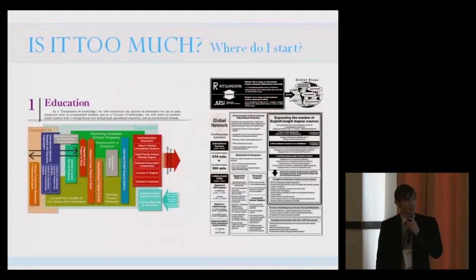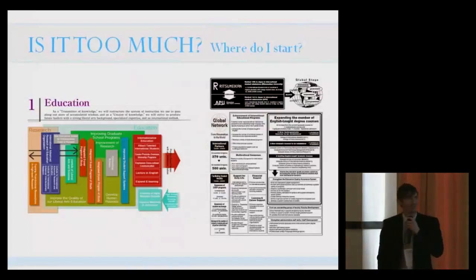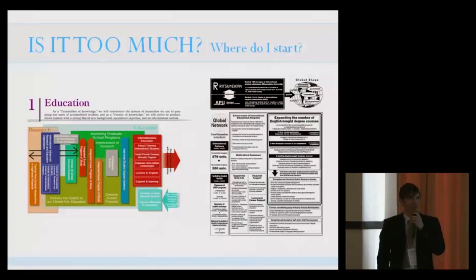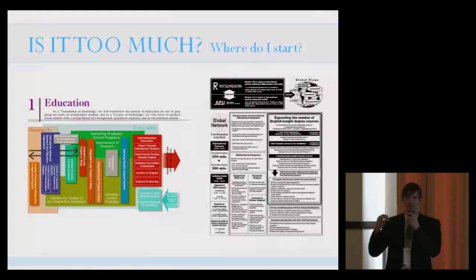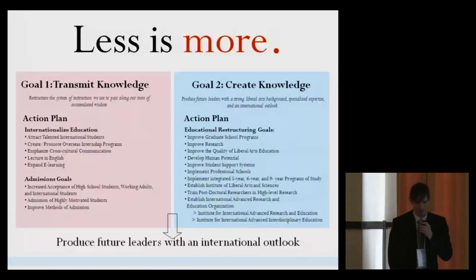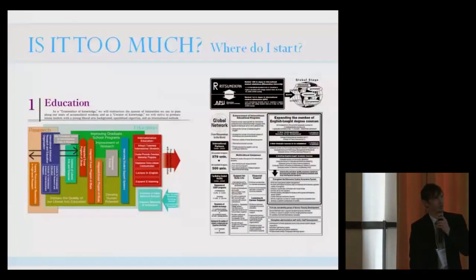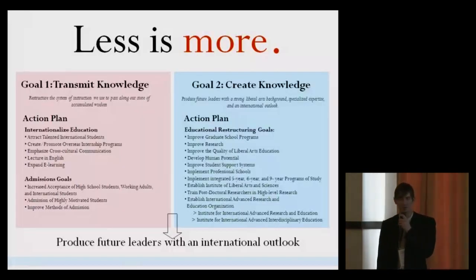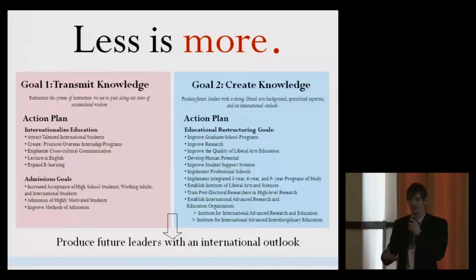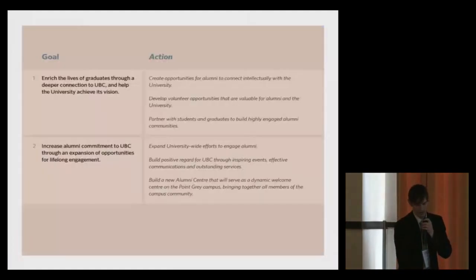Is it too much, and where do I start? I hope one of these diagrams is Ritsumeikan's, but another is from another university in Japan. If you look at these diagrams, you don't really know what they're trying to say. In Ritsumeikan's case, this is about G30 — it seems like it's trying to tell you everything. What could be done better is summarizing with the main points and giving a clear address to where you can research more information. Simply put, less is more. The previous diagram, simplified, is a bit more coherent. It's just an action plan — goal one, goal two, and here's what we're going to do. That's exactly what my university, University of British Columbia, does.